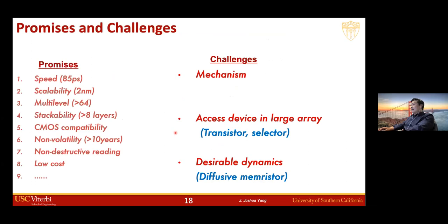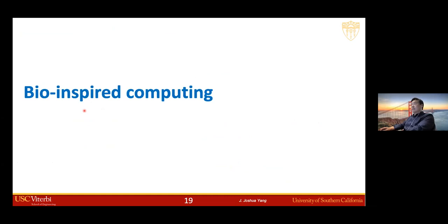There are other challenges. If you use a device in a large crossbar array, in addition to the memristor, you also need something called an access device to work with each memristor so that you can randomly select one device in the array to operate. For the crossbar arrays in my examples, we use a transistor as a selector in the crossbar array. Another challenge for computing application is that we need to engineer some desirable dynamics, such as the ion diffusion dynamics for computing. I'll touch upon that in the next section.